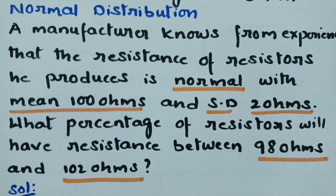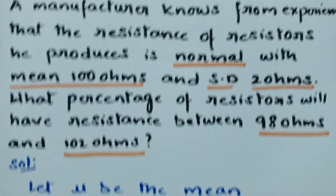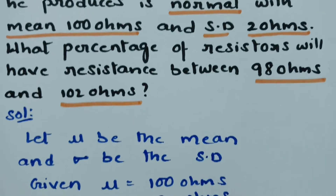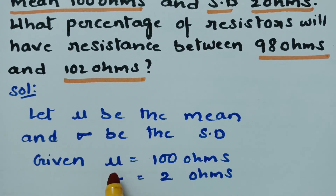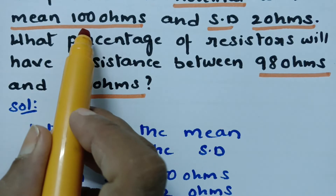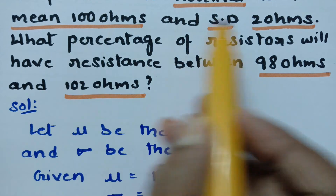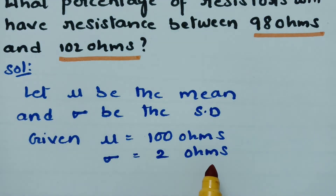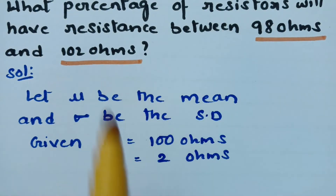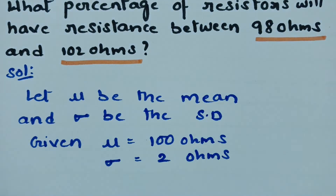Let mu be the mean and sigma be the standard deviation. Mean is given as 100 ohms and standard deviation is given as 2 ohms. We have to find the probability of resistance between 98 ohms and 102 ohms.